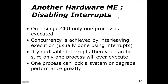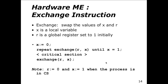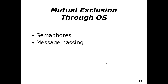Another hardware mutual exclusion approach is disabling interrupts. On a single CPU, only one process executes at a time. Concurrency is achieved by interleaving execution, usually done using interrupts. If you disable interrupts, you can be sure only one process will execute at one time. However, one process can lock a system or degrade performance greatly.